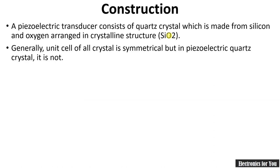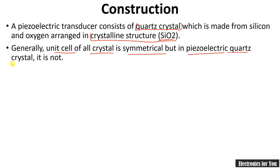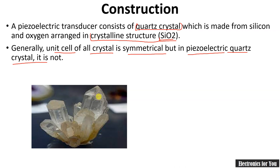Let's see the construction. A piezoelectric transducer consists of a quartz crystal — we can say that it is silicon dioxide in crystalline form. This is the piezoelectric material. When we apply some force over it, it produces an output voltage. The unit cell of an ordinary crystal is symmetrical, but the piezoelectric quartz crystal is not.